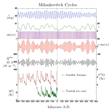Axial precession will promote more extreme variation in irradiation of the Northern Hemisphere and less extreme variation in the South. When the Earth's axis is aligned such that aphelion and perihelion occur near the equinoxes, axial tilt will not be aligned with or against eccentricity.